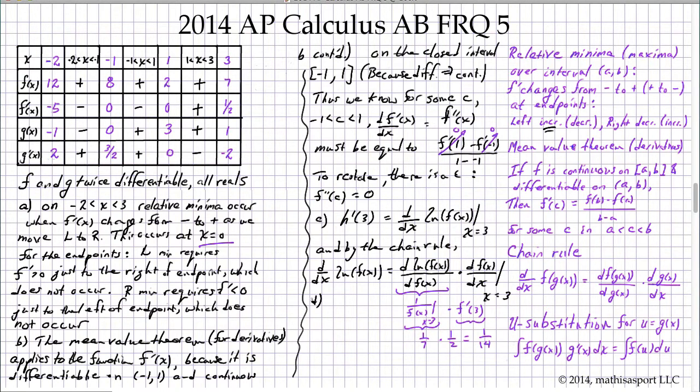And so I'm going to write the integral from negative 2 to 3 of f prime of g of x times g prime of x dx. Let's say we're going to use u substitution using u equals g of x. This integral equals the integral from x equals negative 2 to 3 of f prime of u du.